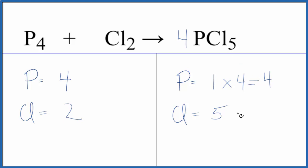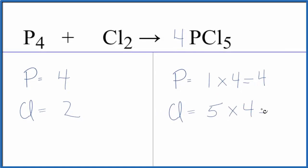But also we have five times four. That'll give us twenty, which is an even number. So now we could just put a ten in front of the Cl2. Two times ten. That would equal twenty, and this equation would be balanced.